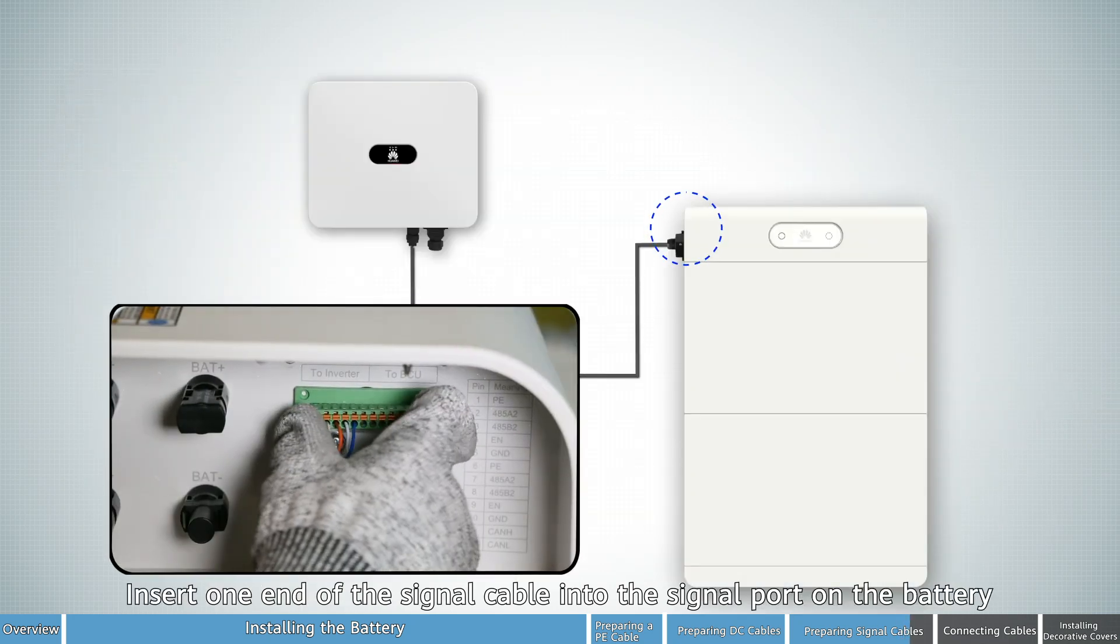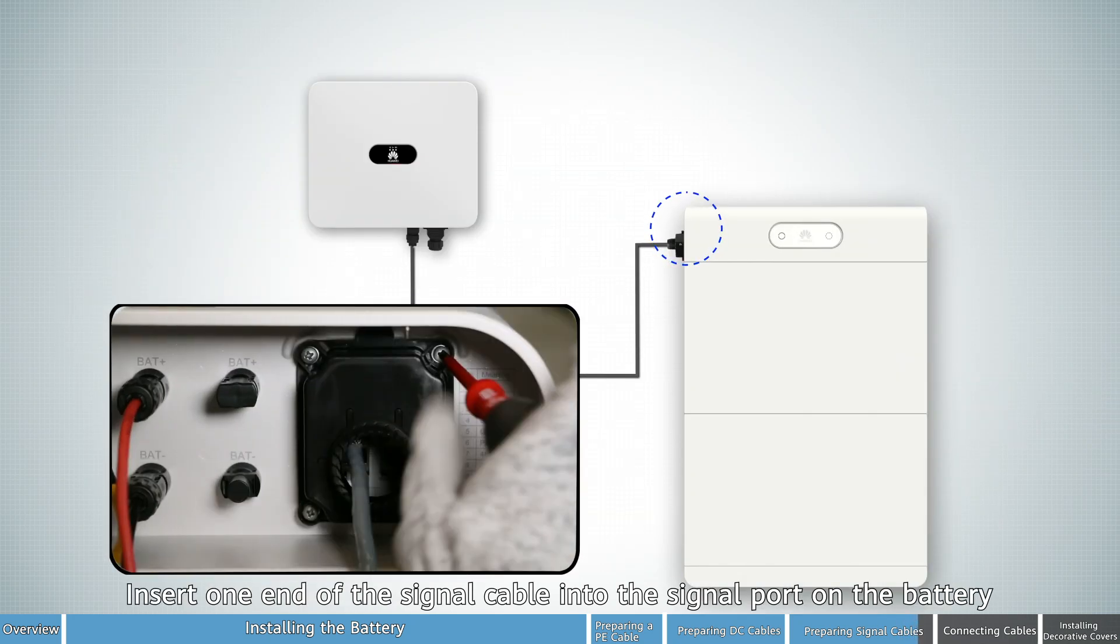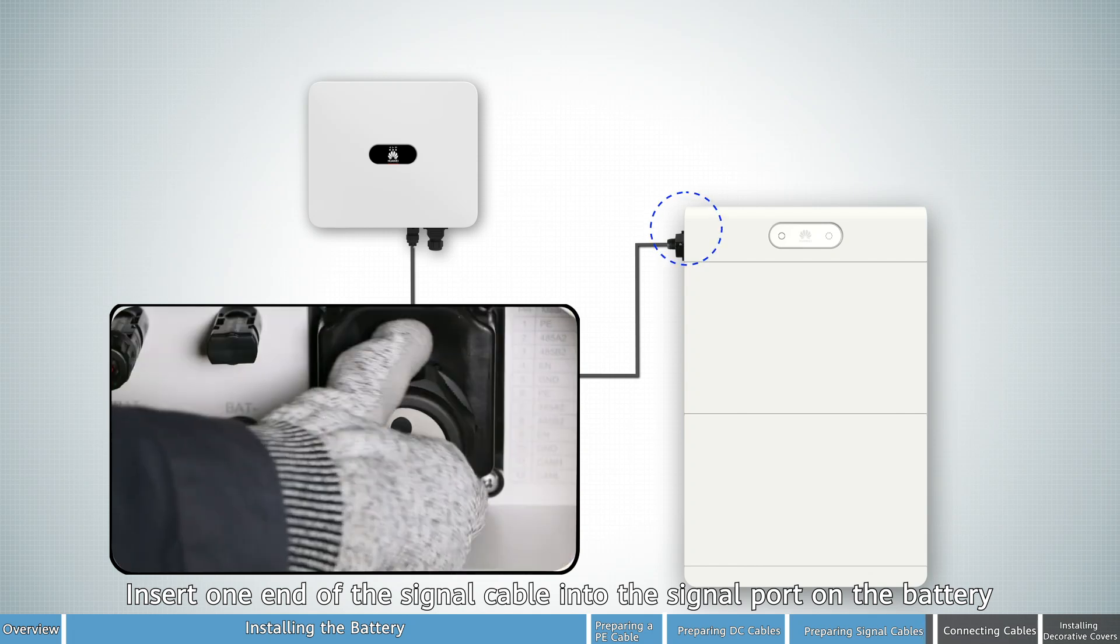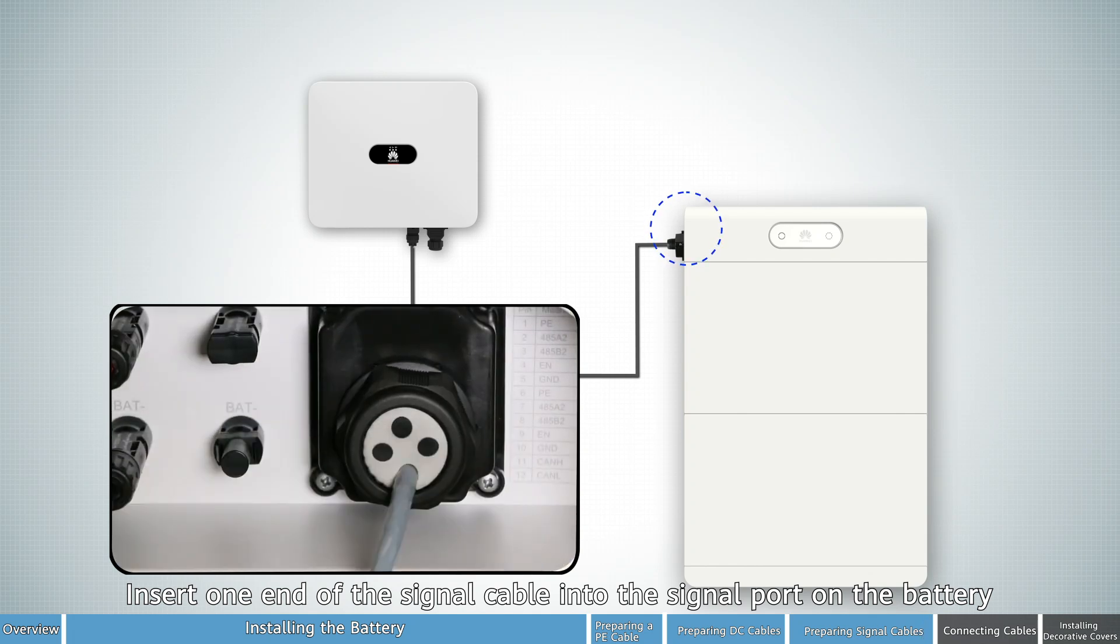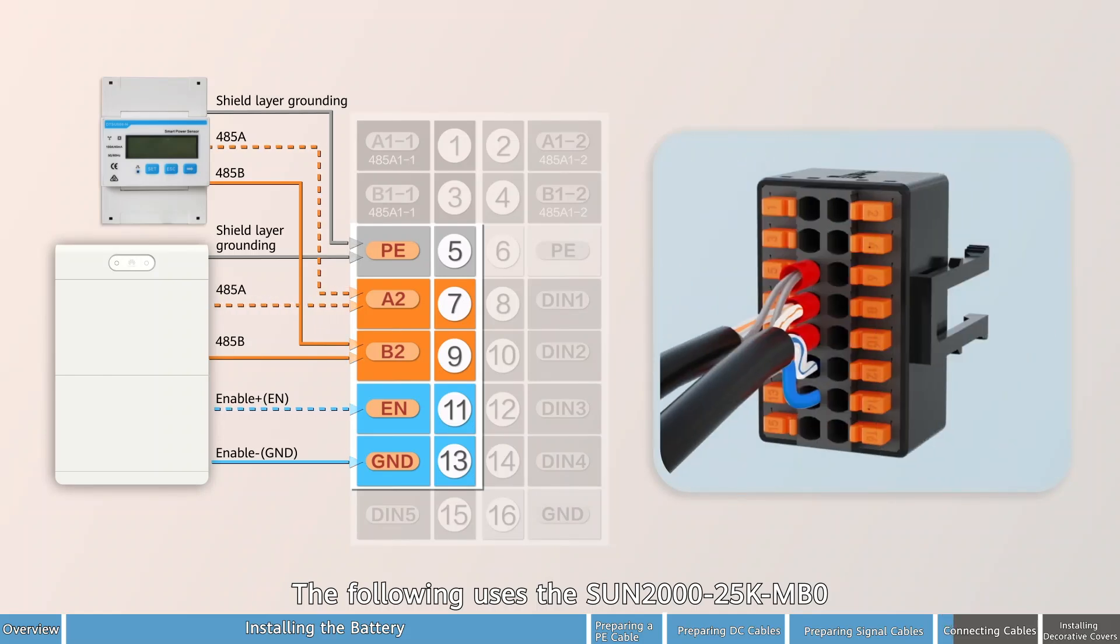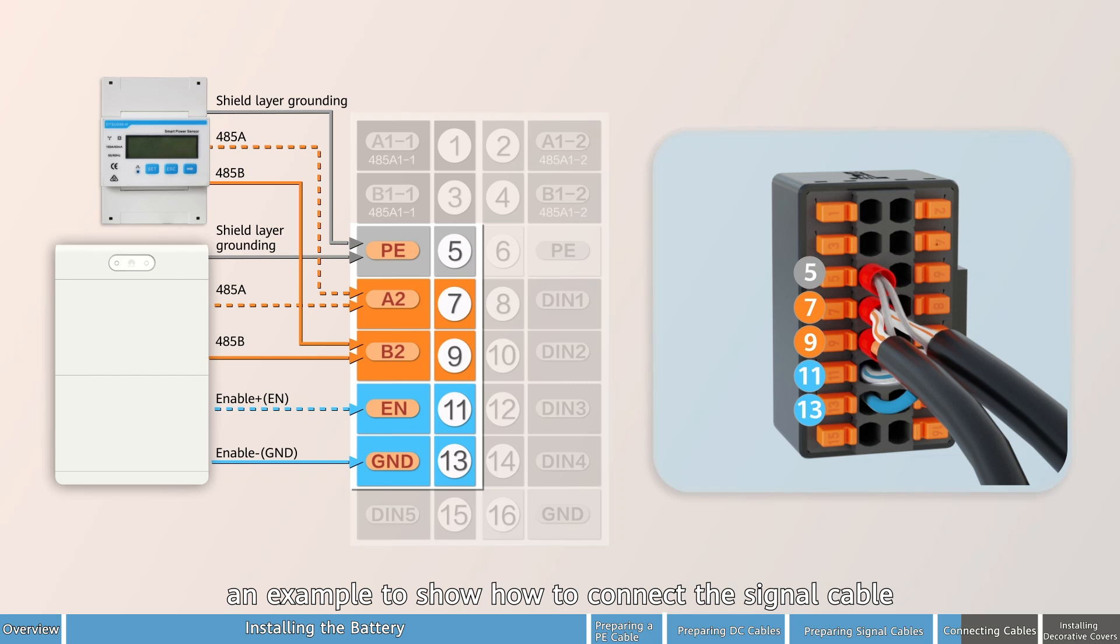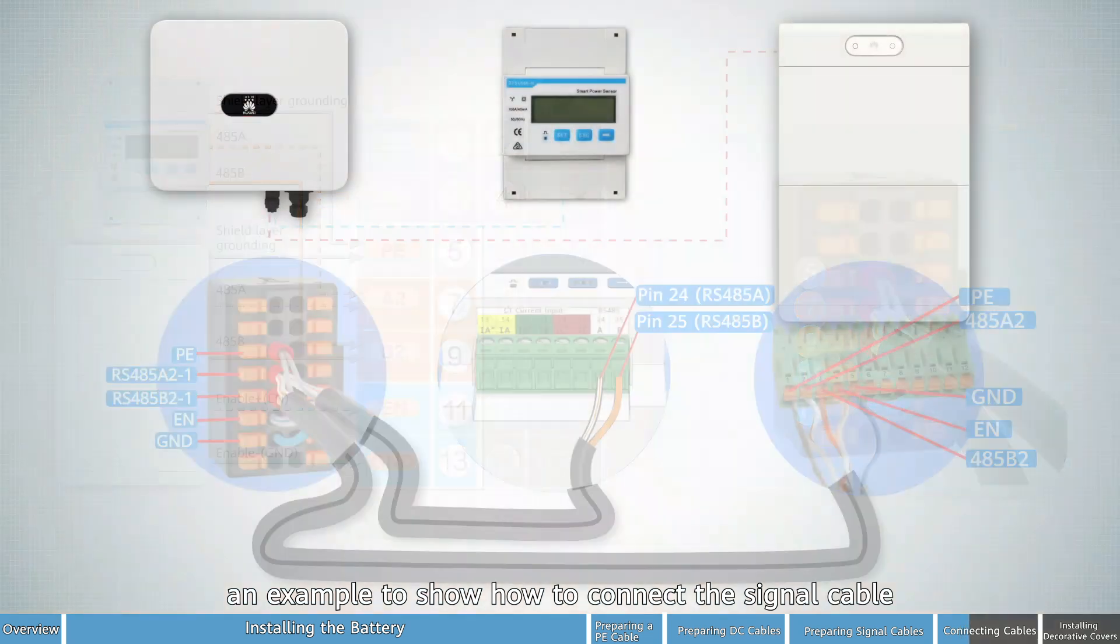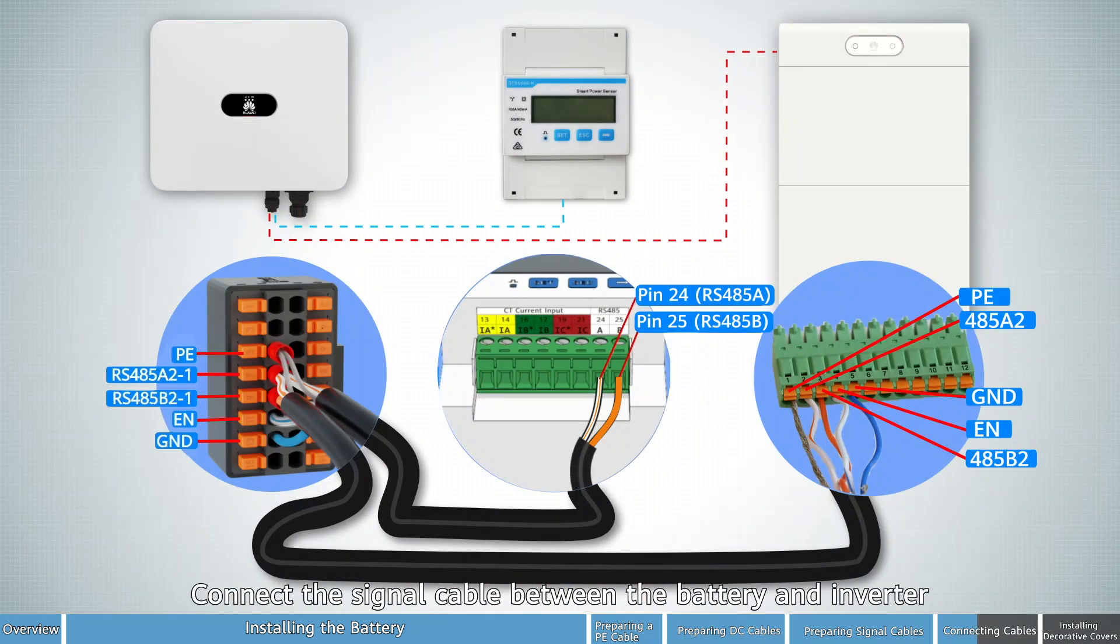Insert one end of the signal cable into the signal port and the battery. The following uses the Sun 2025K MB0 as an example to show how to connect the signal cable. Connect the signal cable between the battery and inverter.